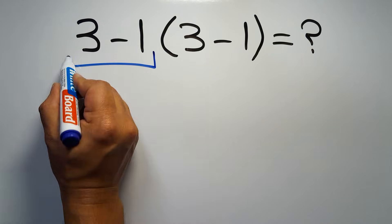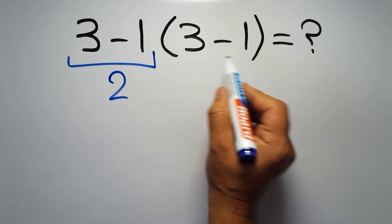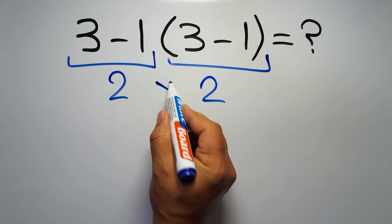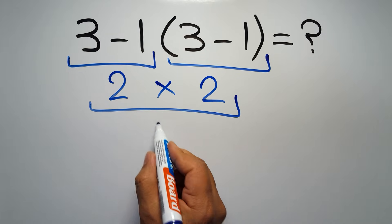3 minus 1 gives us 2, and again here inside this parentheses we have 3 minus 1. So 2 times 2 which equals 4.